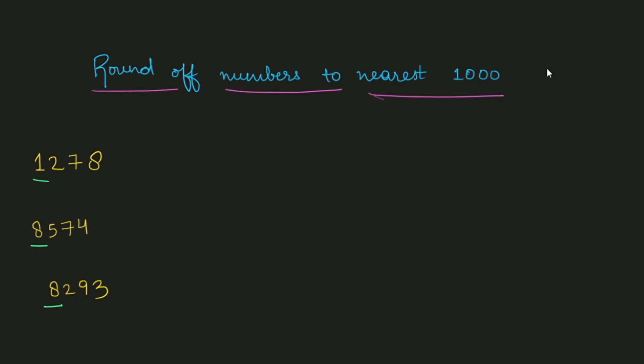Now what do you have to find? Find the next smallest place value. Thousands is the place we're rounding to, so the next smaller place is hundreds. We are going to compare the digit on the hundreds place. So the hundreds digits are 2, 5, and 2 respectively.